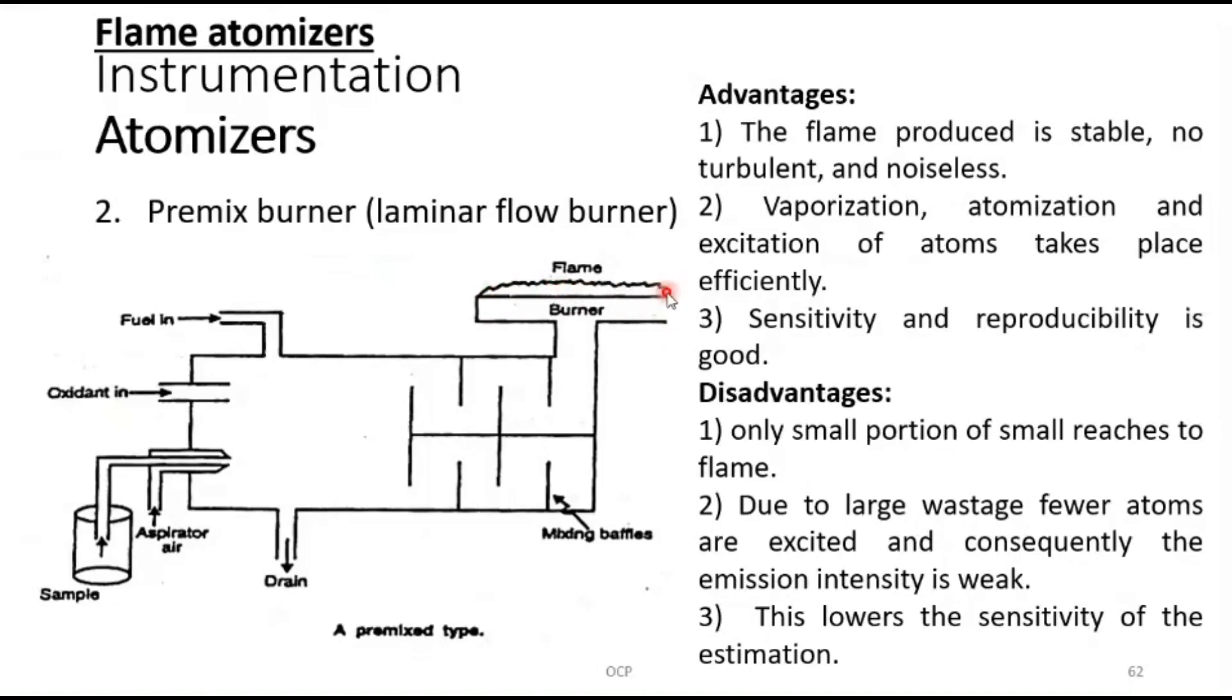You have a flame which is significantly uniform and you will observe that the flame has a larger area than the previous one. What will be the advantage of this premix burner? The flame produced is stable, no turbulence, and it is noiseless.